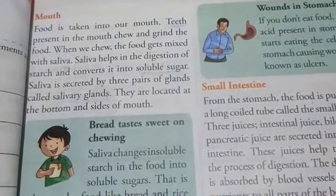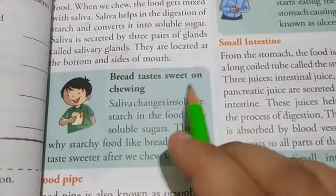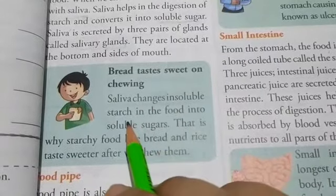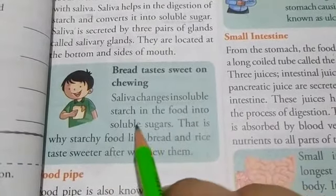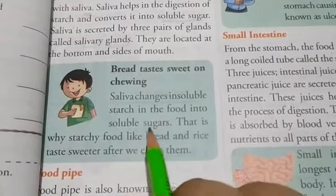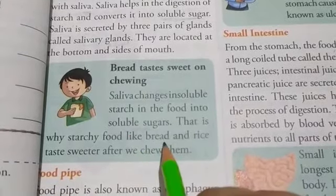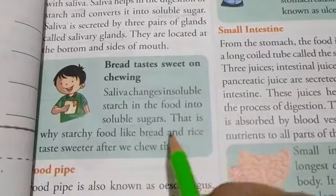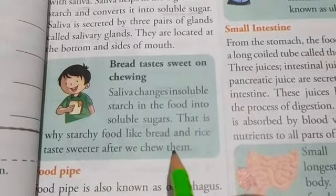Now, why does bread taste sweet on chewing? Because saliva changes the insoluble starch in the food into soluble sugars which get mixed with the liquid present in the body. That is why starchy foods like bread and rice, which contain starch, taste sweeter after we chew them.